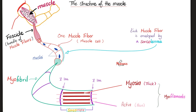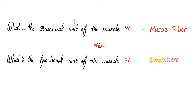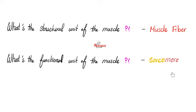Each sarcomere has myosin, which are the thick filaments, and actin, which are the thin filaments. So what's the structural unit of your muscle? The muscle fiber — your anatomy professor cares about that. But what's the functional unit of the muscle? The sarcomere — your physiology professor cares about that.